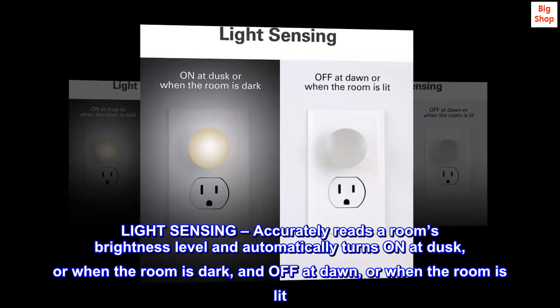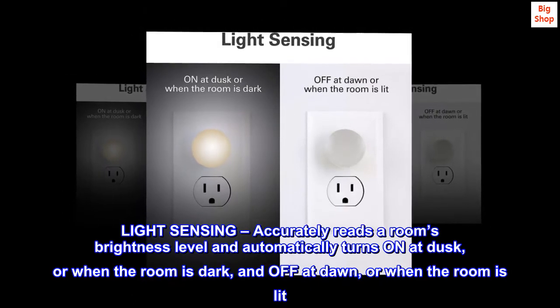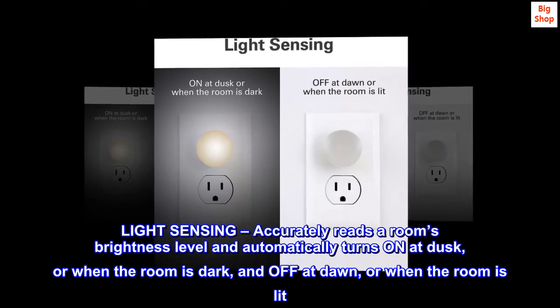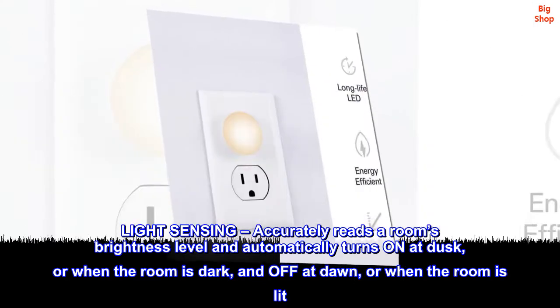Light sensing. Accurately reads a room's brightness level and automatically turns on at dusk or when the room is dark, and off at dawn or when the room is lit.